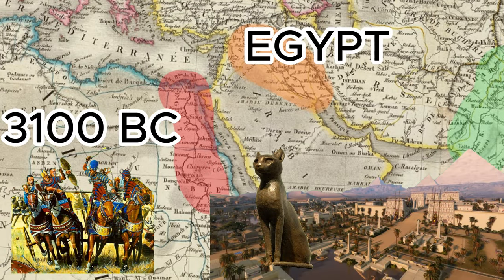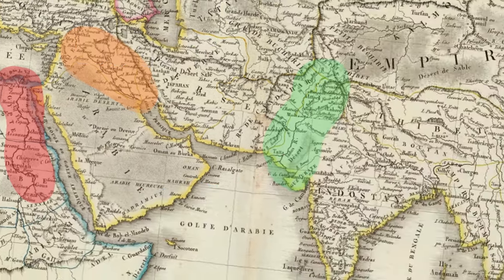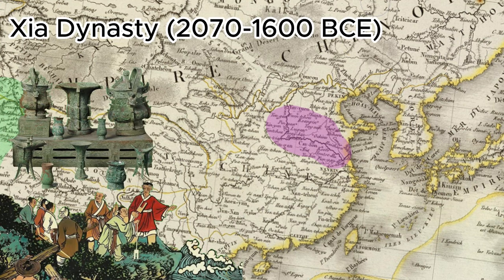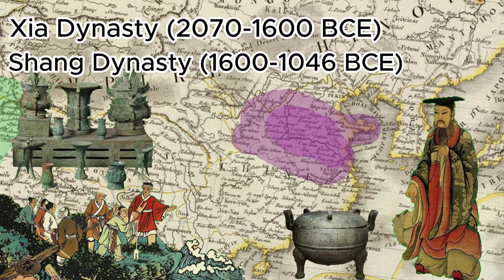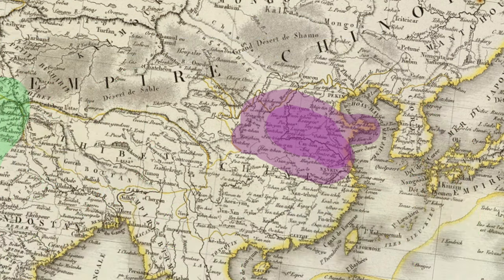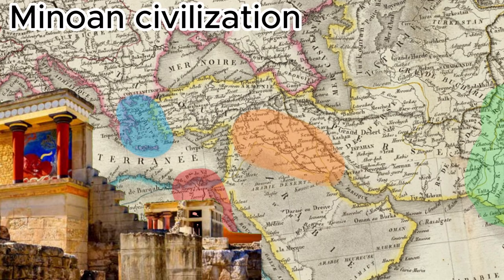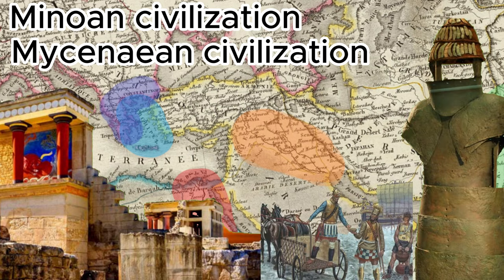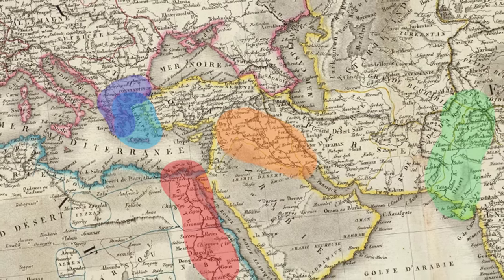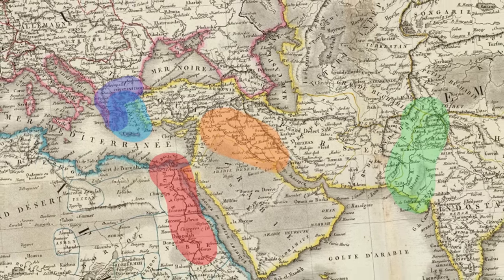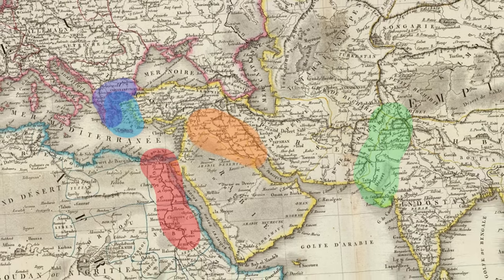Ancient Egyptians began using bronze around 3100 BCE for tools, weapons, jewelry, and religious artifacts. In ancient China, the Xia Dynasty (2070–1600 BCE) and the subsequent Shang Dynasty (1600–1046 BCE) were among the earliest cultures to use bronze extensively. Chinese bronze objects, particularly ritual vessels called ding and hu, are renowned for their craftsmanship. In Europe, the Minoan civilization on Crete and the Mycenaean civilization on the Greek mainland were using bronze by around 2000 BCE. The transition to the Bronze Age did not occur simultaneously worldwide, and bronze-working technology likely spread through trade and cultural diffusion.